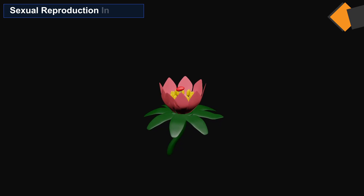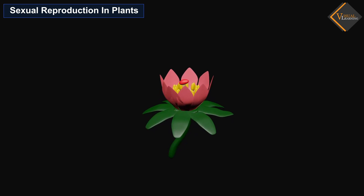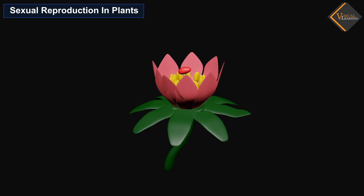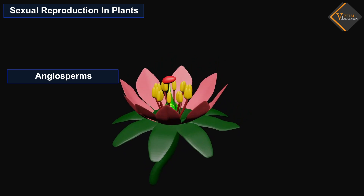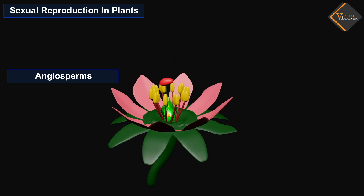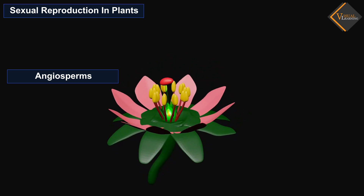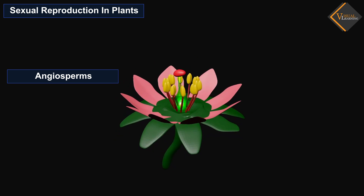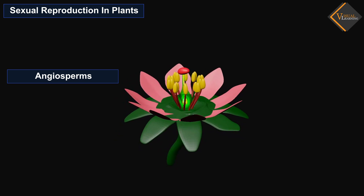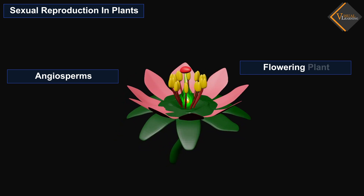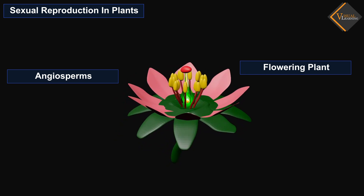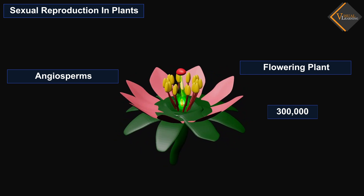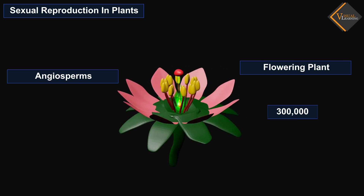Sexual reproduction in plants. The angiosperms have both the male and female reproductive organs. Angiosperms, also called flowering plants, include any of about 300,000 species of flowering plants.